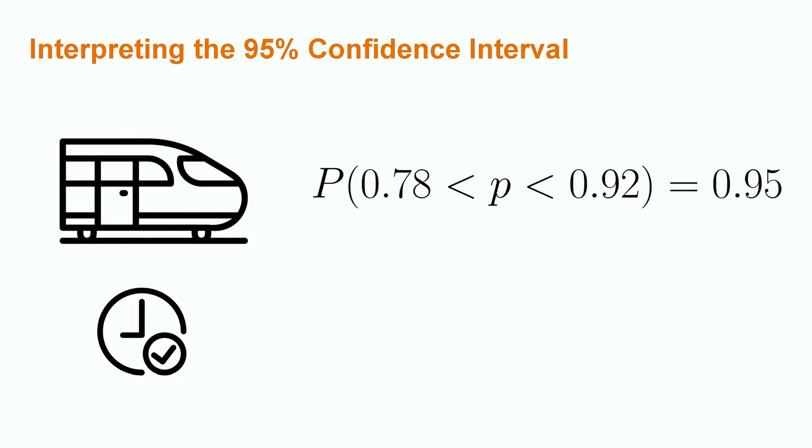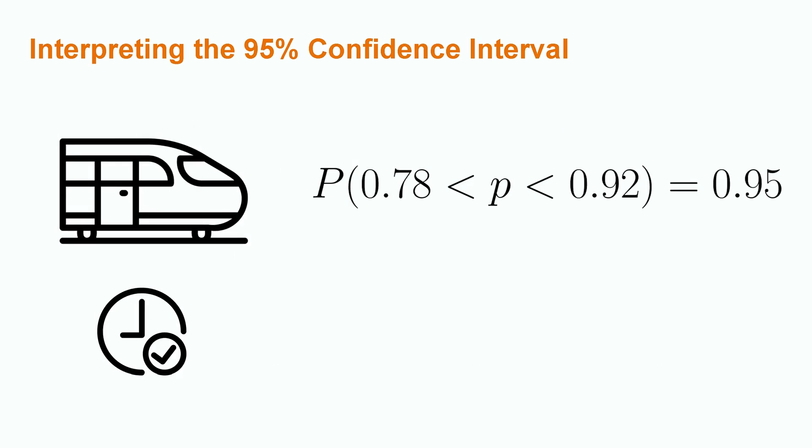So how do we interpret these results? Well, we can now make the following claim: the probability that the true proportion of on-time trains is between 78% and 92% is equal to 0.95.